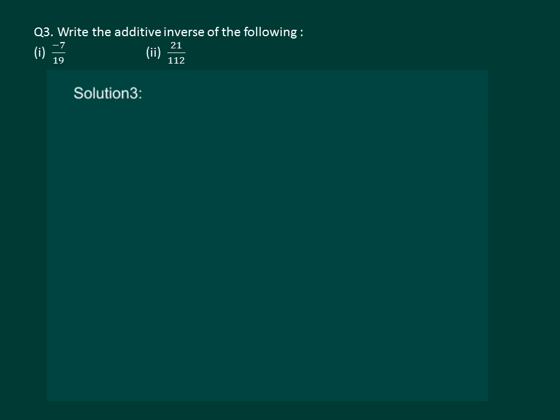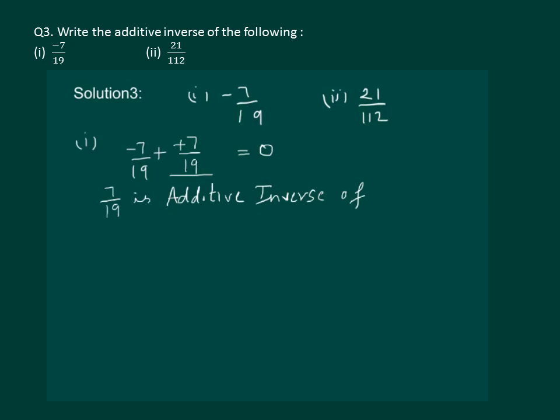Let us read the question. Find the additive inverse of -7/19 and 21/112. Let us do the first part. Finding additive inverse of -7/19 means what should be added to -7/19 so that the answer is 0. Clearly, if we add +7/19 our answer will be 0. So, 7/19 is additive inverse of -7/19.